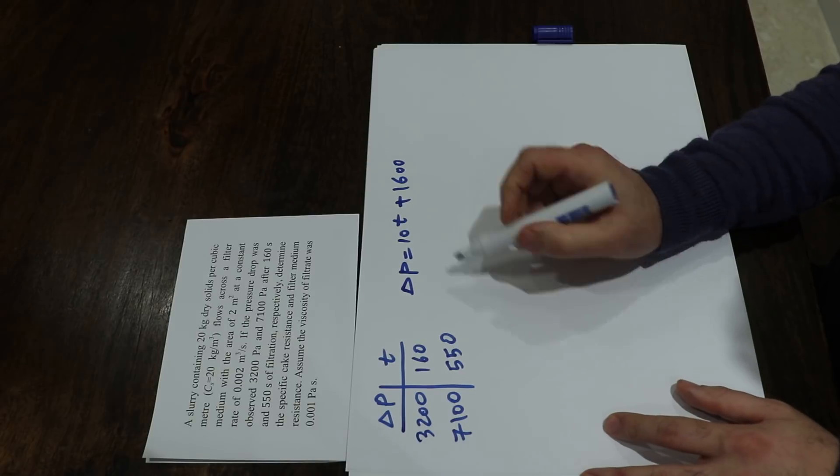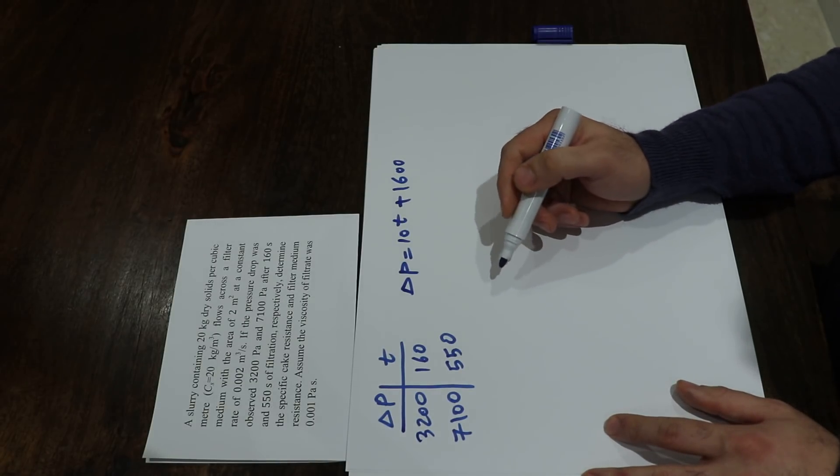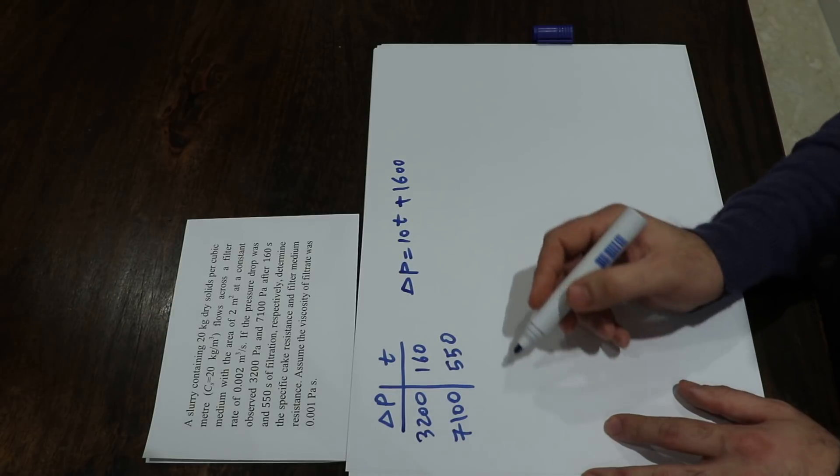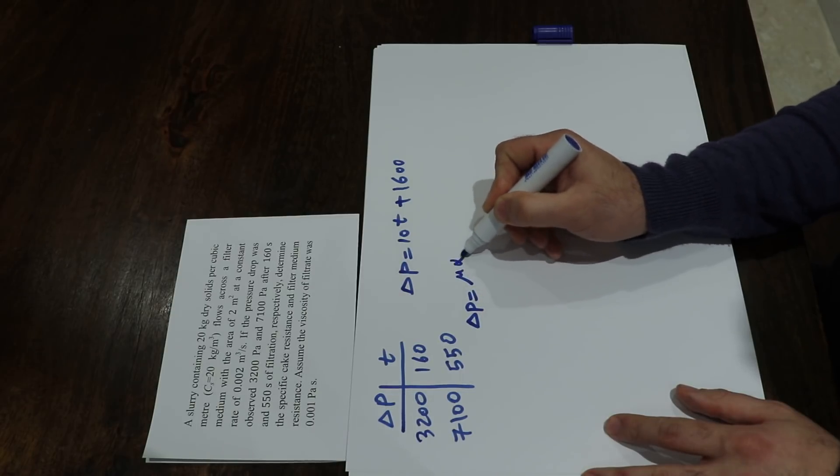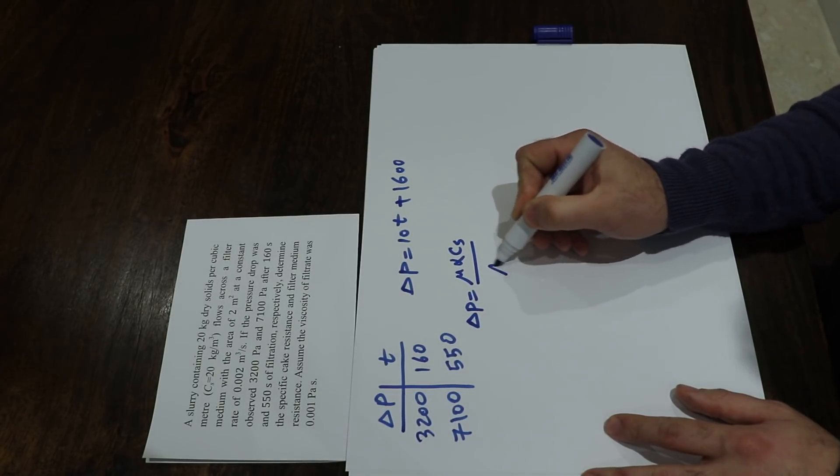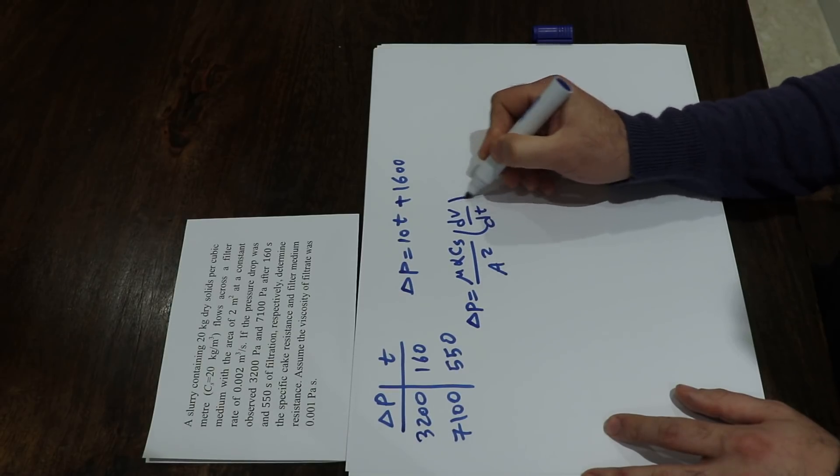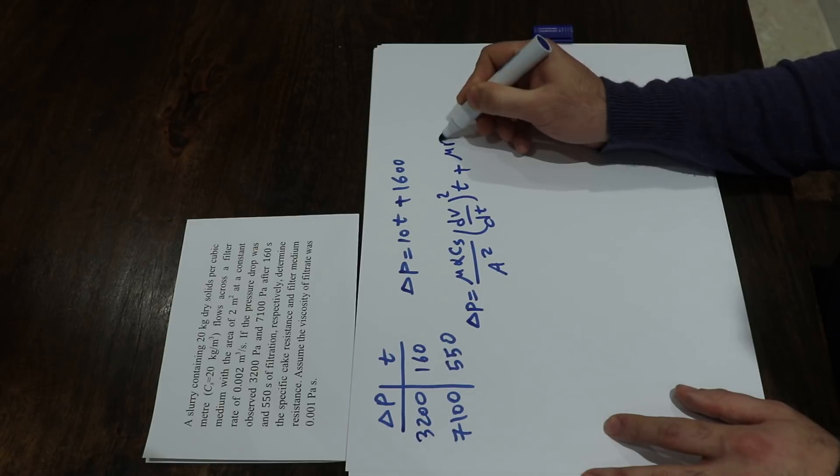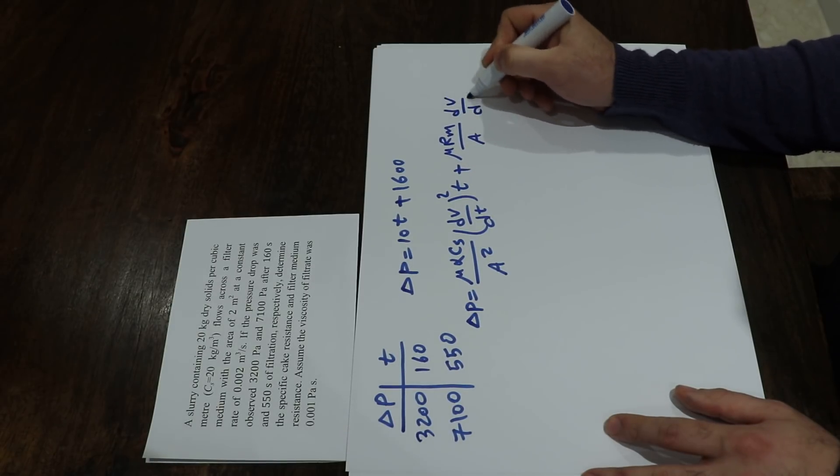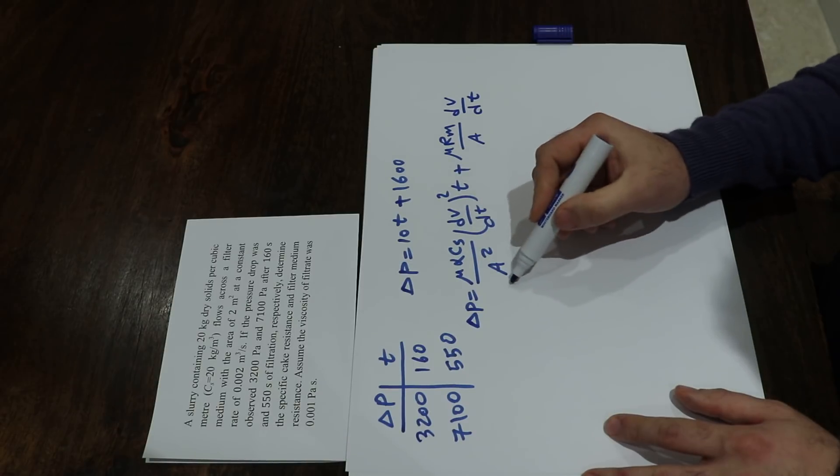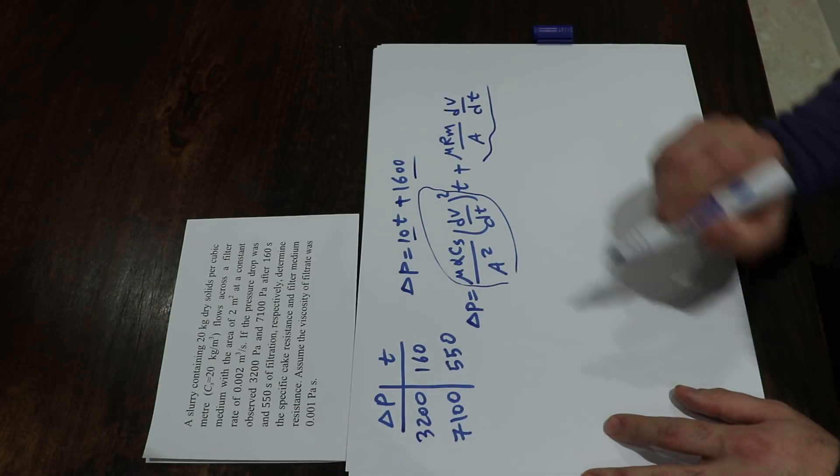So if you compare this equation with the filtration equation under constant flow rate, that is delta P equal to mu alpha Cs divided by A squared times dv over dt to the power of 2 times t, plus mu Rm divided by A times dv over dt.